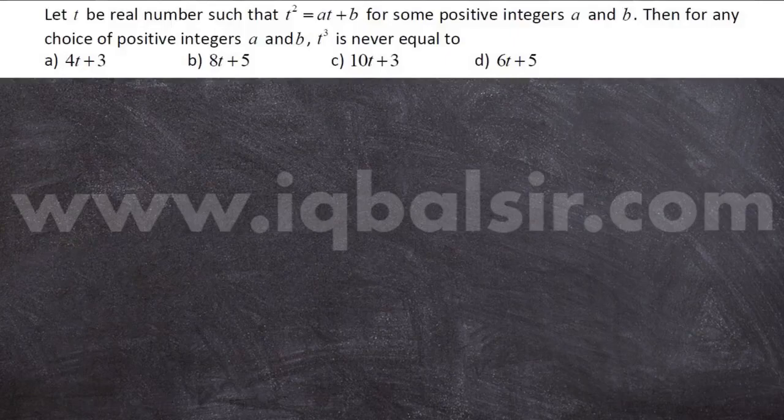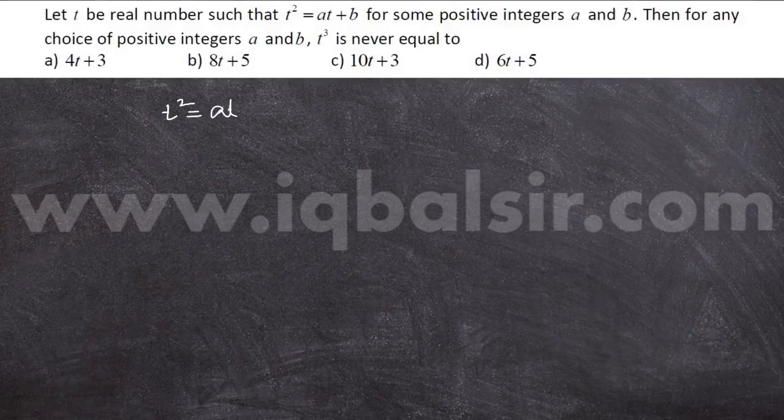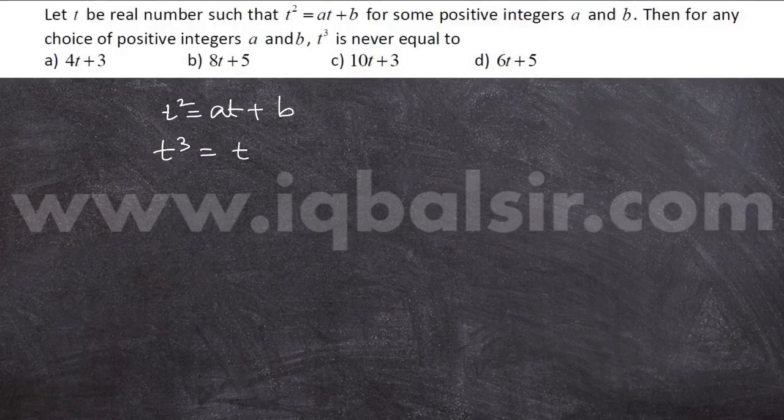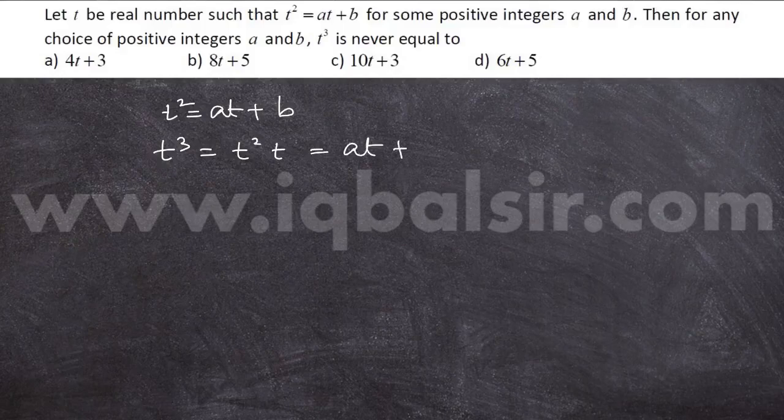This is a very easy question. We have t squared is equal to at plus b. When you find t cubed, t cubed can be written as t squared into t. So this is at plus b into t.